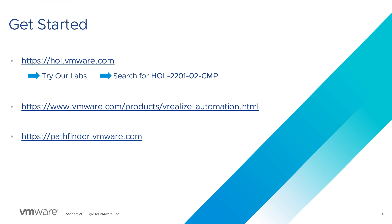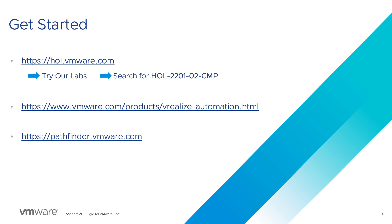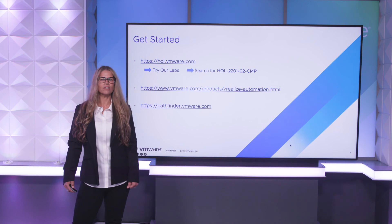You can take this lab now by visiting hol.vmware.com and searching for vRealize Automation or 2201-02. Remember, all labs are free and available 24/7. There is nothing to install and you can return and take the lab as often as you like. Learn more about vRealize Automation by searching vmware.com. Also, check out pathfinder.vmware.com to find many VMware product experiences in one place so you can easily learn and evaluate VMware solutions for your organization.